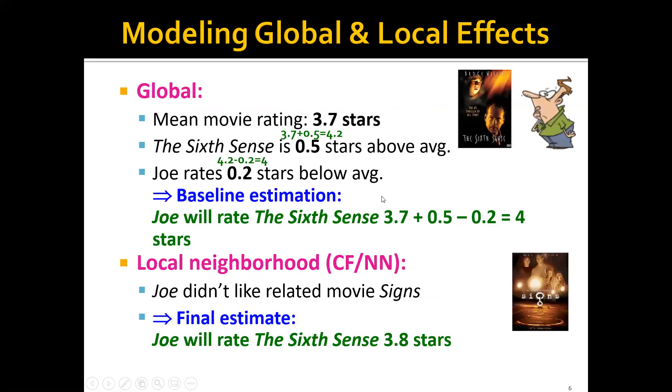For the global model, it's actually quite simple. It starts with the mean movie ratings over the whole rating matrix. These are the average ratings of all the users of all the movies. The mean movie rating of Netflix is 3.7 stars. And let's say that for one particular movie, The Sixth Sense, the movie has relatively high ratings. The average rating of this movie is 0.5 stars above the average.